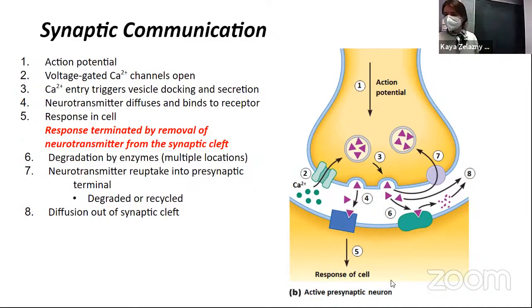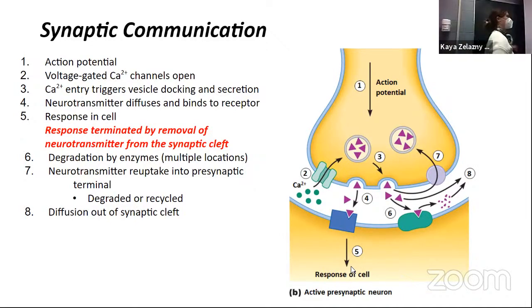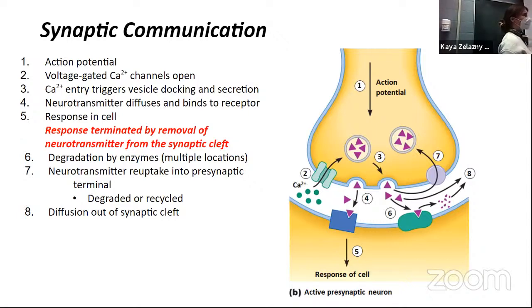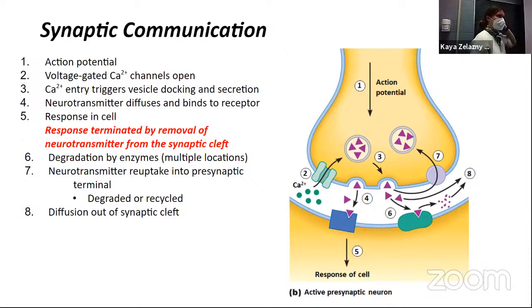The response in the cell is either going to be excitatory — getting closer to the threshold for that cell — or it'll be inhibitory, getting farther away from threshold, so basically hyperpolarization.